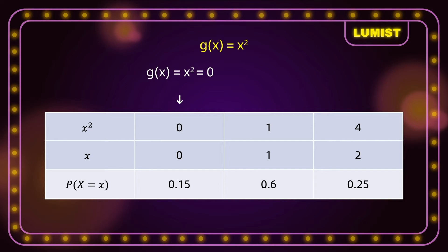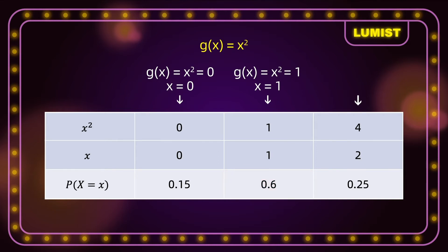We can show this using a table with an extra row for g(x) = x². When x² = 0, x = 0 and the probability is 0.15. When x² = 1, x = 1 and the probability is 0.6. When x² = 4 (i.e., 2²), x = 2 and the probability is 0.25. No matter how we scale x, we get the same probabilities.